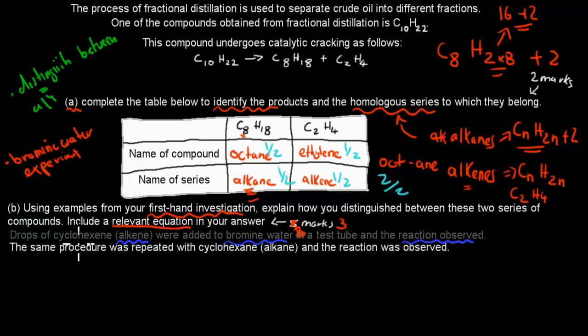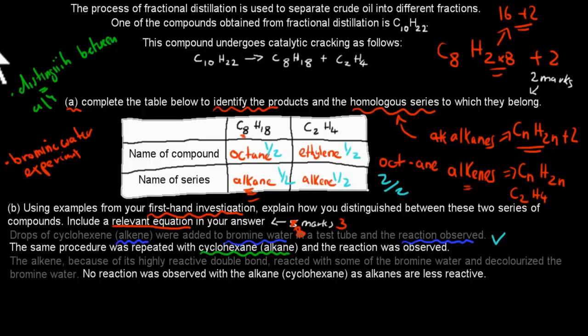So you saw what happened. And next, we did the same thing again. So the same procedure was repeated with cyclohexane. So we did the same thing with our alkane, which was cyclohexane. And the reaction was observed. So that's the first. We get one mark for this, because we recalled the experiment, which was the bromine experiment.